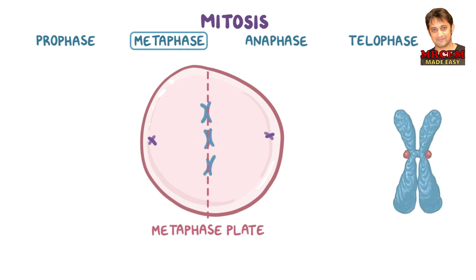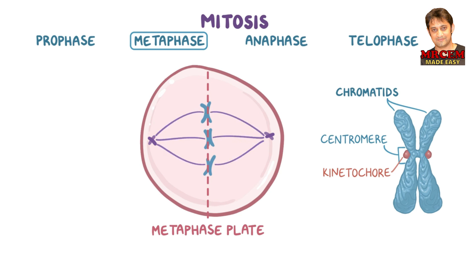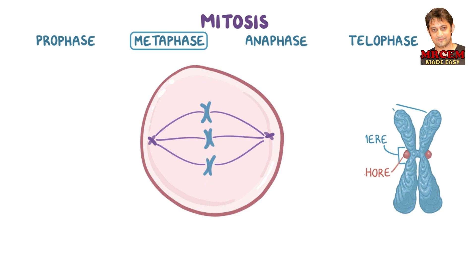Each chromosome is made up of a pair of sister chromatids, which are joined together at the centromere where there's a specific protein complex called the kinetochore. When the chromosomes are in place, each centrosome sends out thread-like projections called spindle fibers that attach to the centromere of each chromosome. Spindle fibers consist of microtubules that originate from the centrioles and polymerize in the direction of the kinetochores.